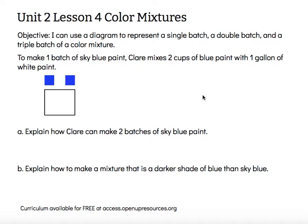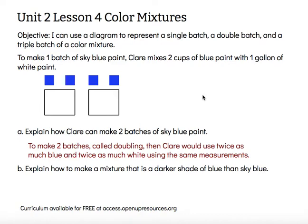Letter A says, explain how Claire could make two batches of sky blue paint. Well, this diagram shows one batch, so if I want two batches — that means to double — I would just use twice as much blue and twice as much white. That would make the same shade of sky blue, but it would create twice as much as the original recipe. So to make two batches, called doubling, Claire would use twice as much blue and twice as much white using the same measurements — the same cups and gallons as she did before.